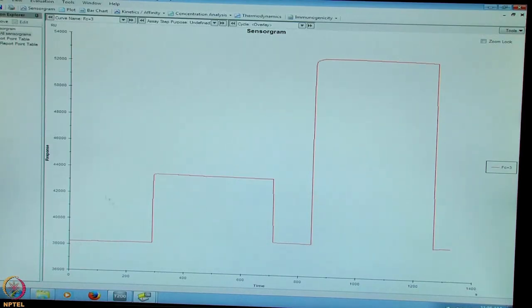After immobilization, we will see the reference surface is blank immobilized. Here you see the activation of the chip by EDC and NHS and blocking of the surface with ethanolamine. So this will be the blank immobilization.